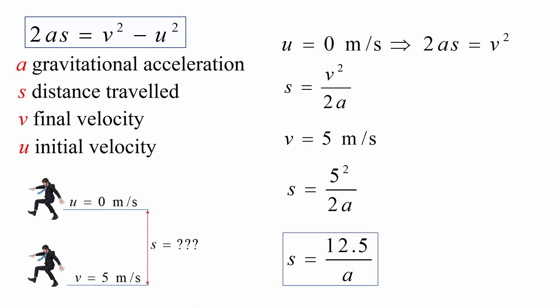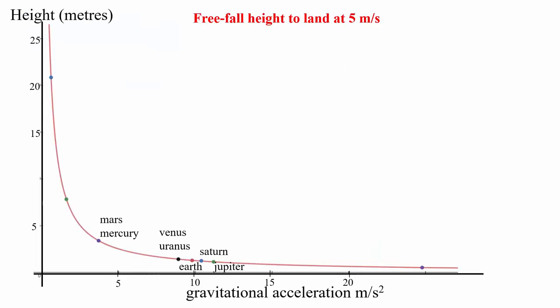If we plot points for that equation, you can see the curve we obtain. And I've marked on it the different planets and the moon representing the acceleration. So for example, there we are for Earth. So it has a value of 1.3 meters.